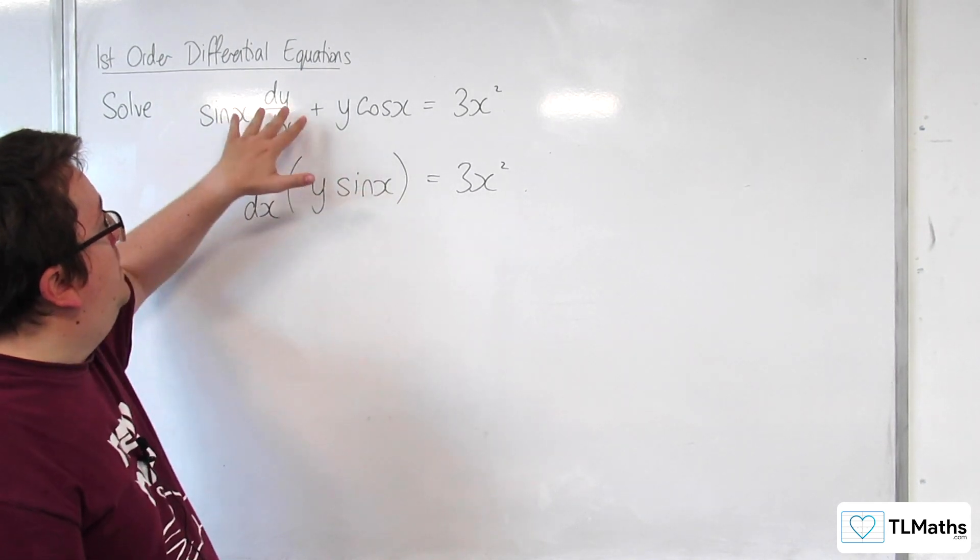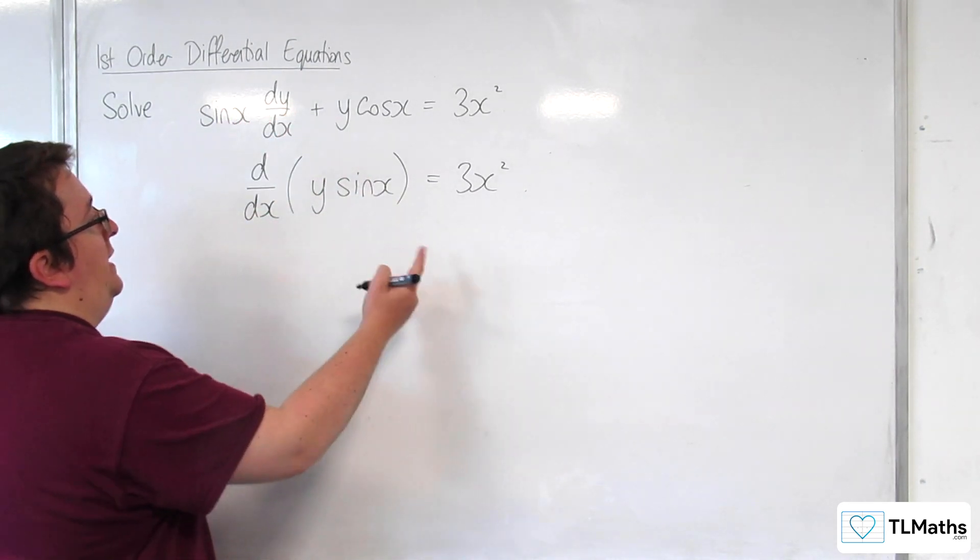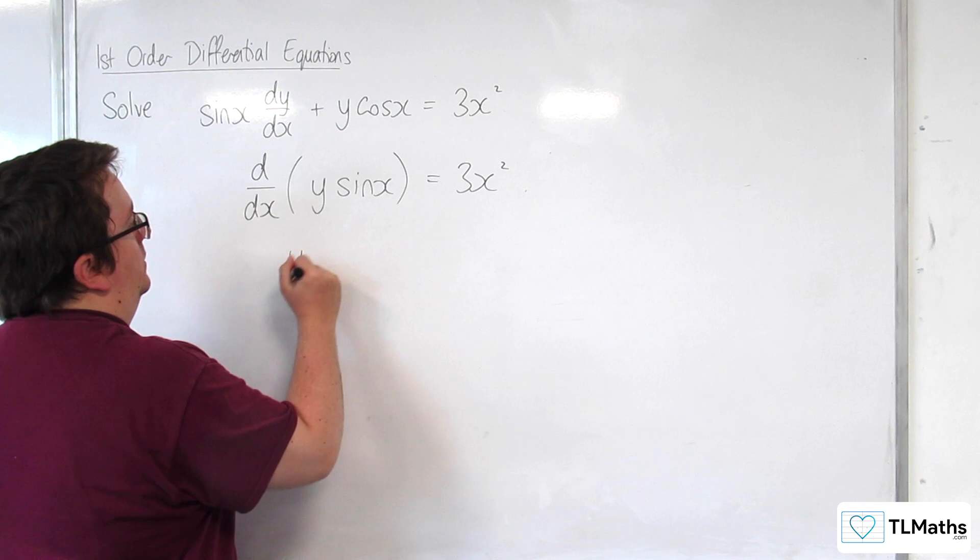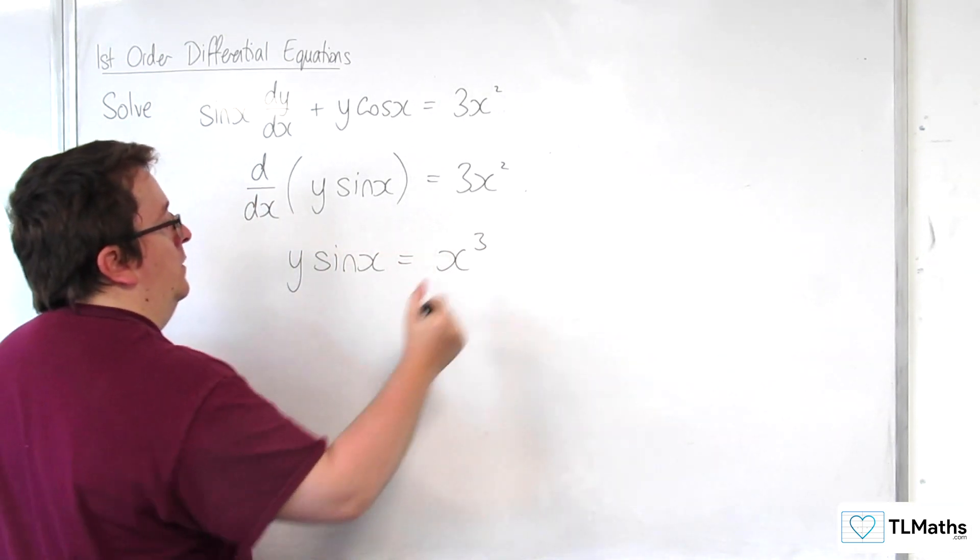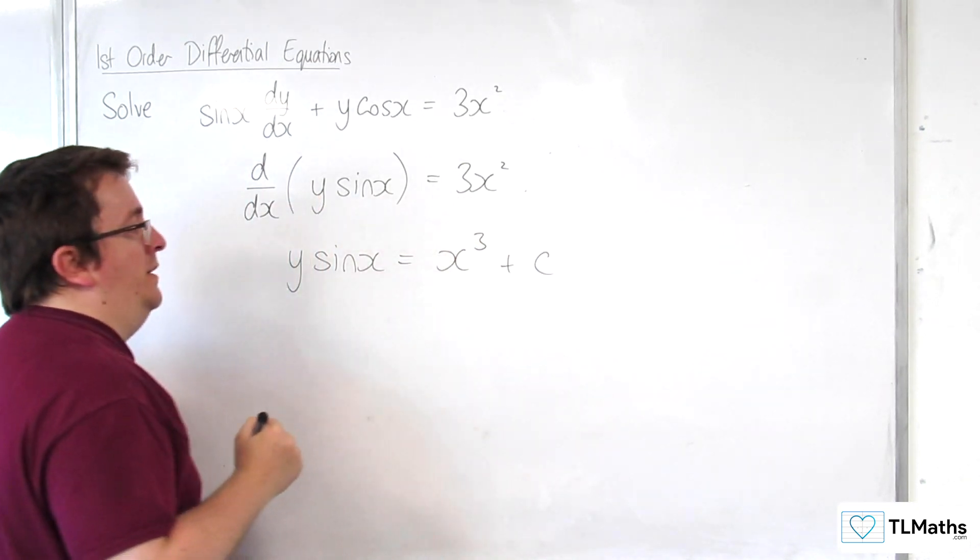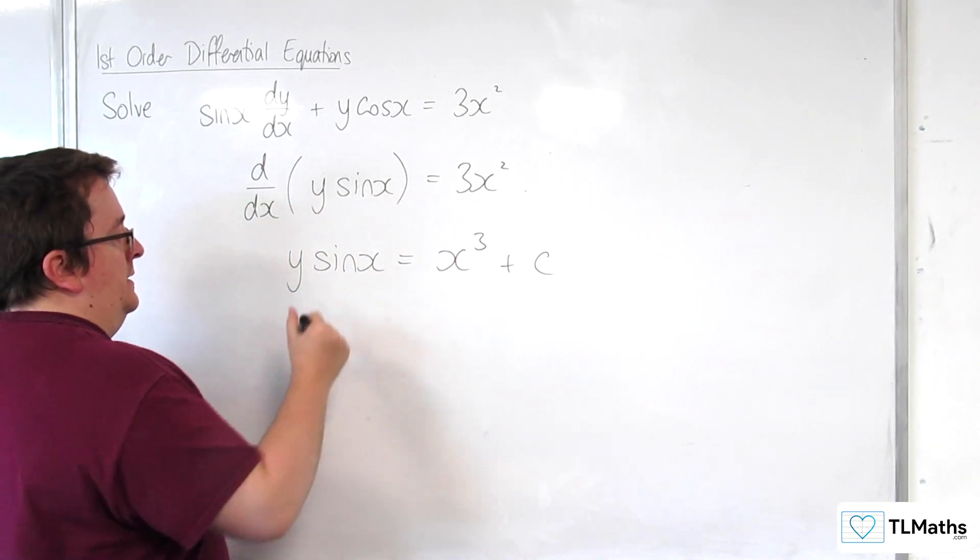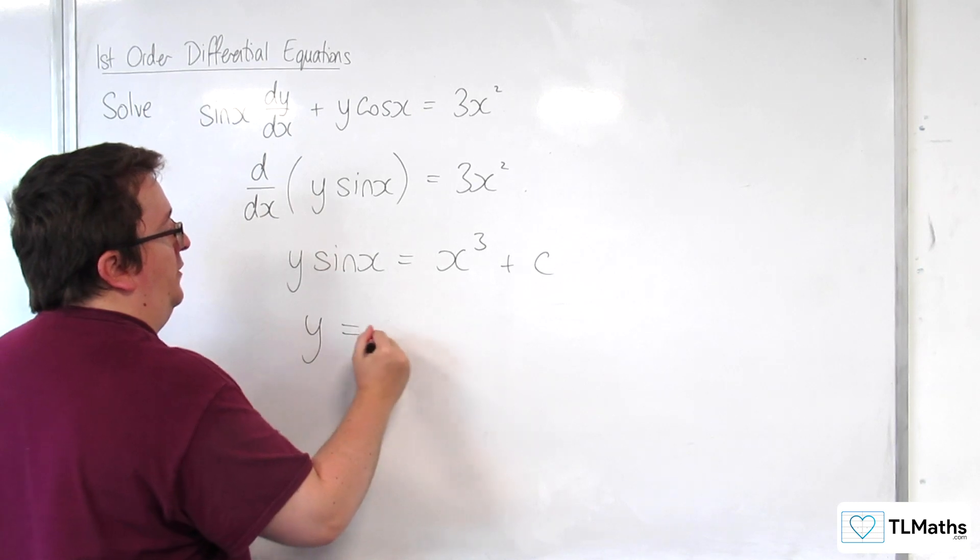So this is the same as that. So now we can integrate both sides. So we get y sine x is equal to x cubed plus c. And then we can divide both sides by sine x.